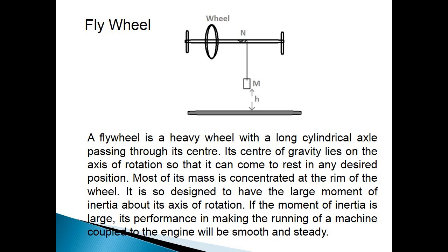Most of its mass is concentrated at the rim of the wheel. It is so designed to have the large moment of inertia about its axis of rotation. If the moment of inertia is large, its performance in making the running of a machine coupled to the engine will be smooth and steady.